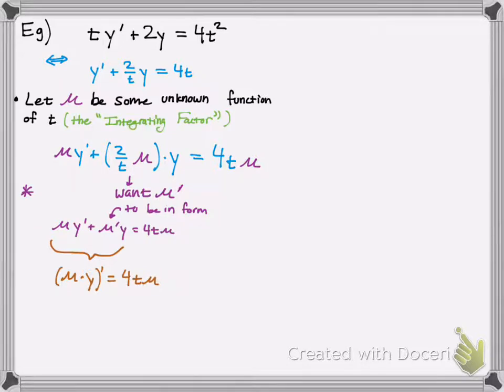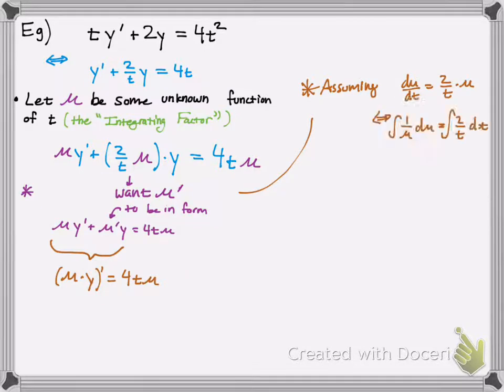So just writing the rest of the equation there. So the assumption we made was that du dt, or mu prime, is equal to 2 over t times mu. And then we just use our separation of variable methods like we normally do, and we can integrate both sides and solve for mu.